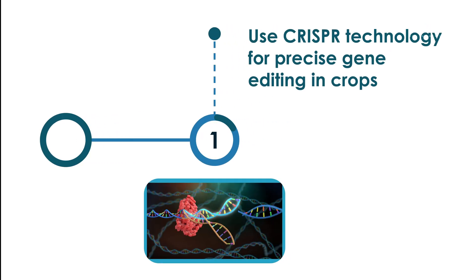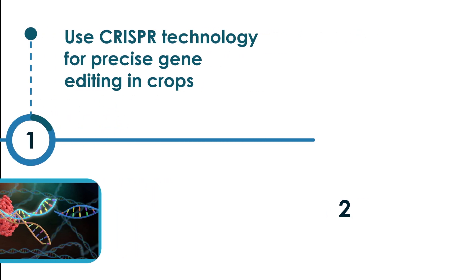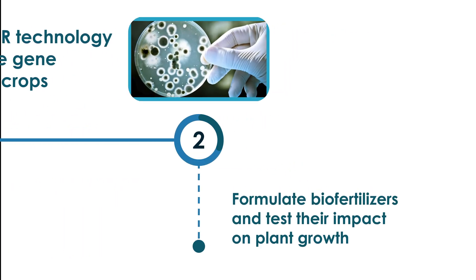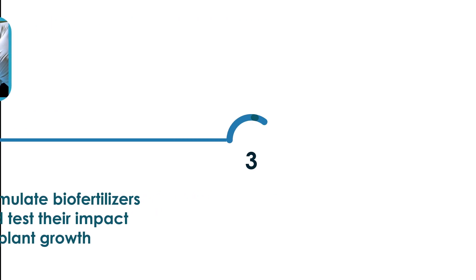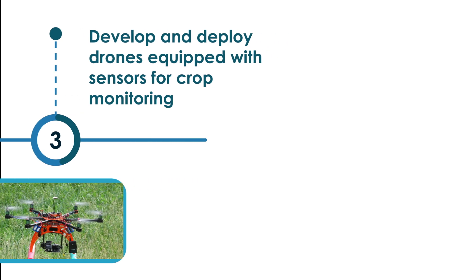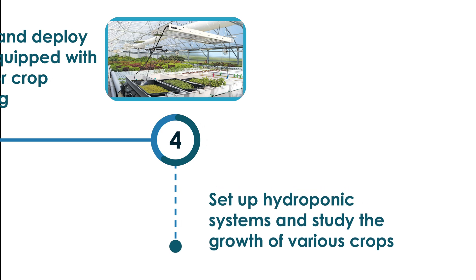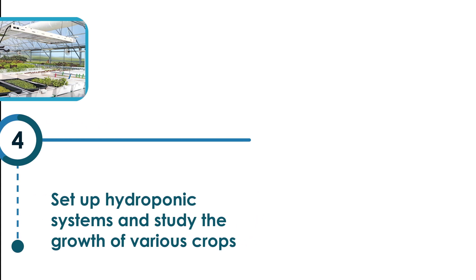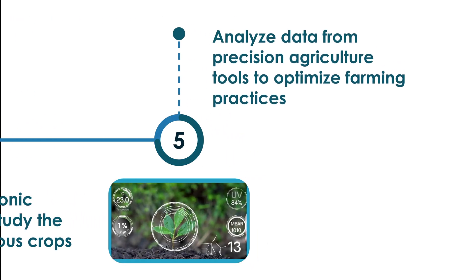For research and prototype development: use CRISPR technology for precise gene editing in crops; formulate bio-fertilizers and test their impact on plant growth; develop and deploy drones equipped with sensors for crop monitoring; set up hydroponic systems to study the growth of various crops; and analyze data from precision agriculture tools to optimize farming practices.